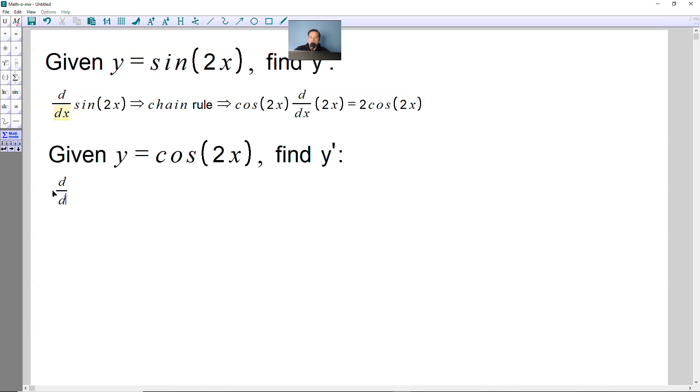For the second one, you're going to have the derivative with respect to x of cosine of 2x. You make this observation because you have an inside 2x and an outside cosine that tells you that the chain rule is the appropriate rule again.